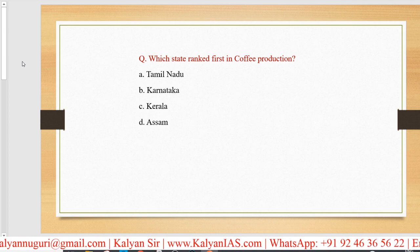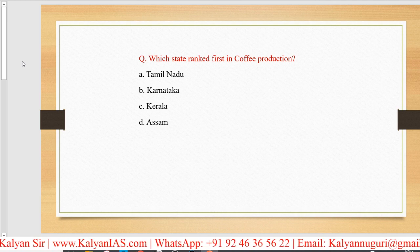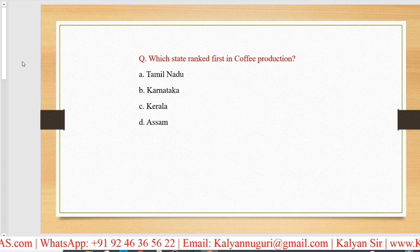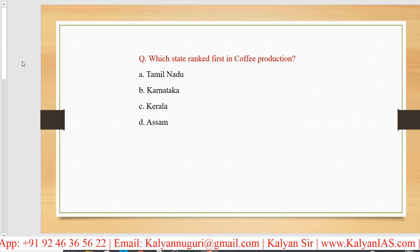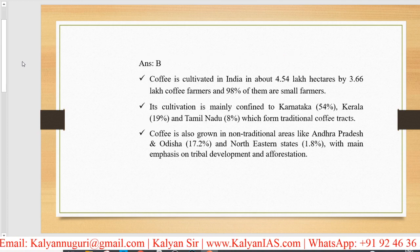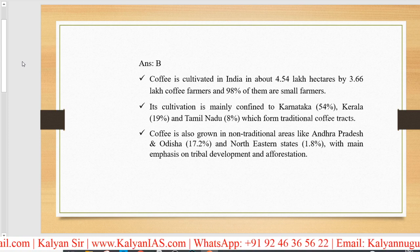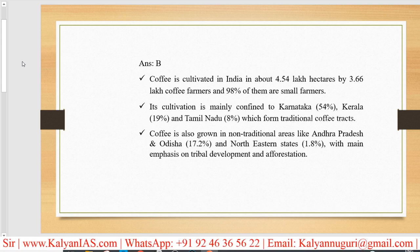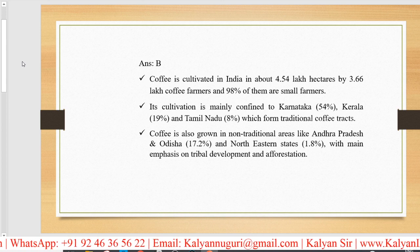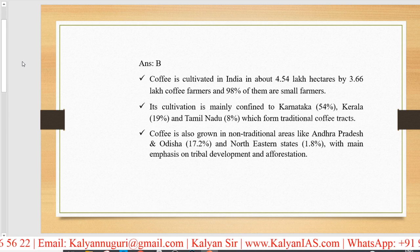Which state ranked first in coffee production? Everyone knows it. The answer is option B — Karnataka. Coffee is cultivated in India in about 4.54 lakh hectares with 3.66 lakh coffee farmers, and out of these, 98% are small farmers.